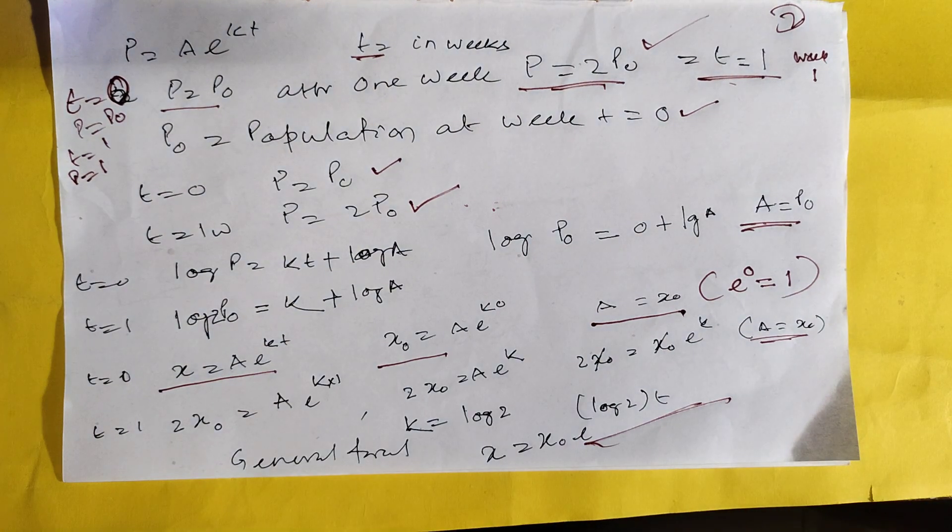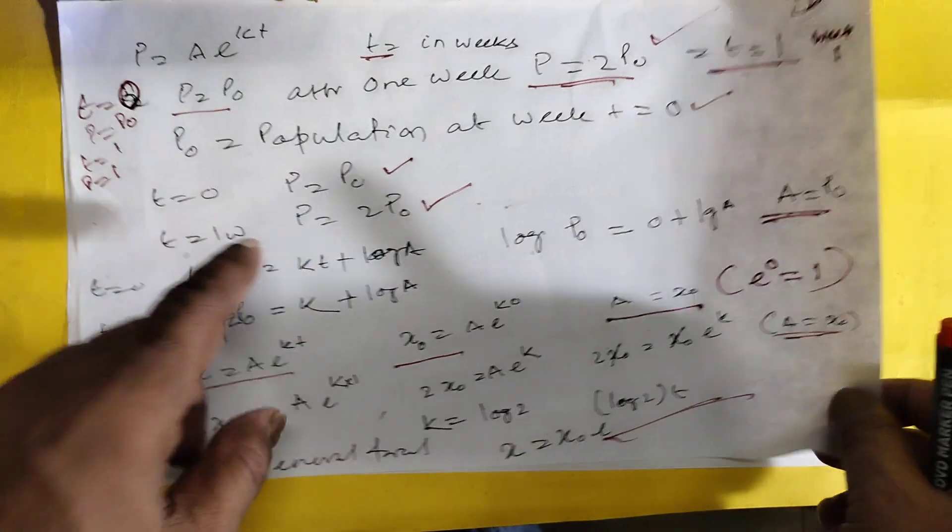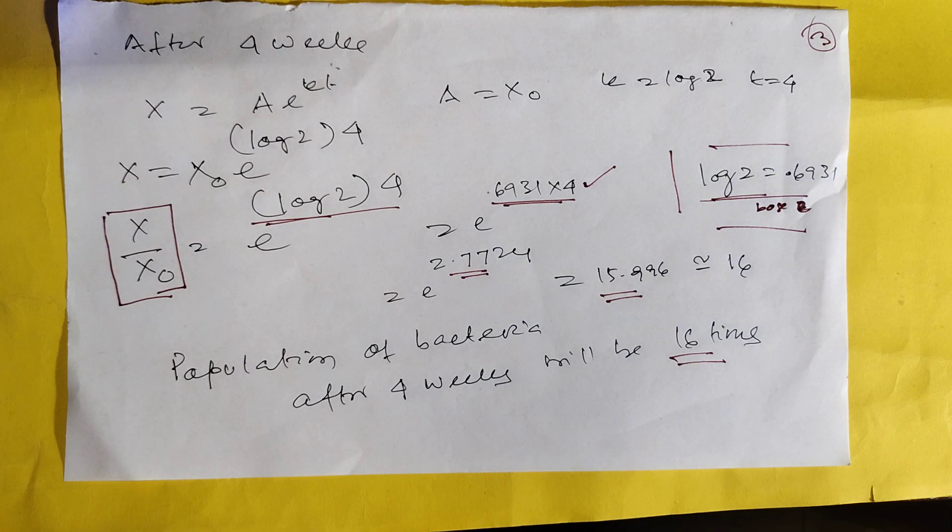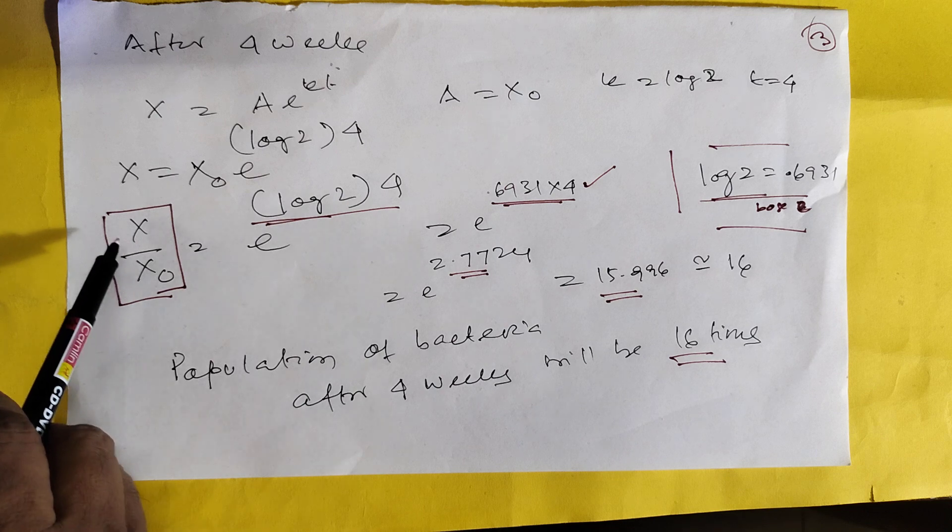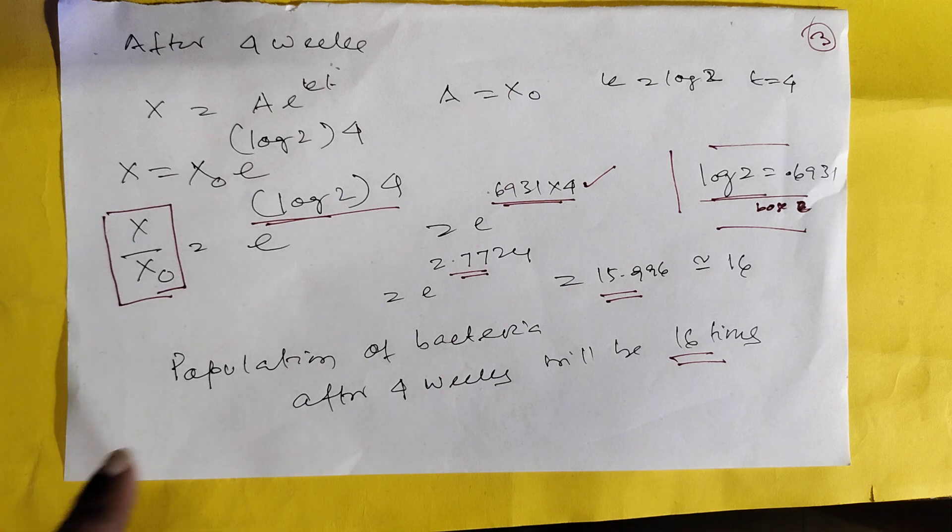This formula will calculate what is the population after 4 weeks. Here is the final formula. After 4 weeks, what is X? X, how many times? That means X minus X0, how many times is it? Now e to the log 2 times 4. What is Y4? T is equal to 4.